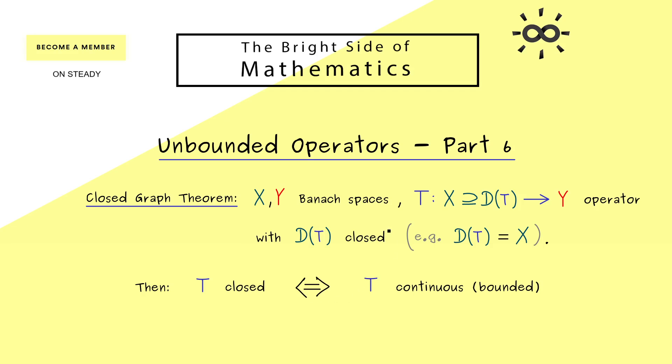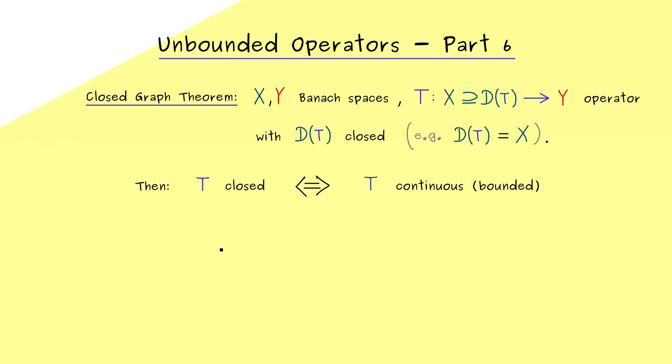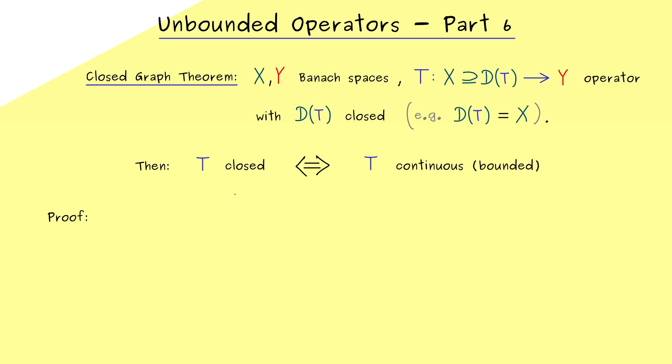Then I would say let's immediately write down a proof for this nice fact. And since we have an equivalence we want to show here, we need to write down two directions. And I would say we start with the easy one, which means we go from a bounded operator to a closed operator. However, to make our notation here a little bit simpler, let's always assume that the domain of T is equal to X. And as I have told you before, this assumption is without loss of generality. In some sense we can just restrict our operator T to the smaller Banach space.